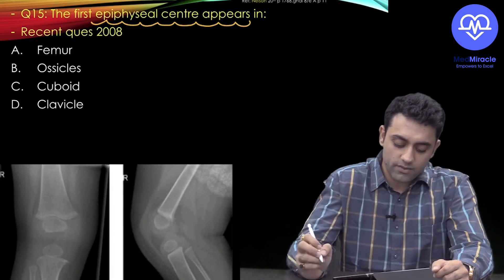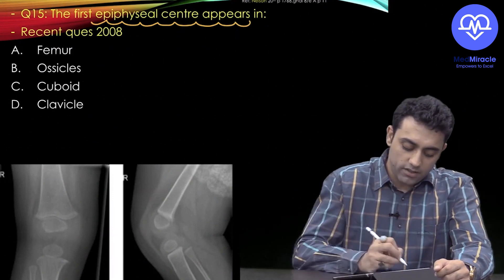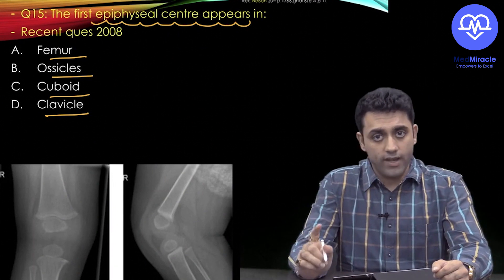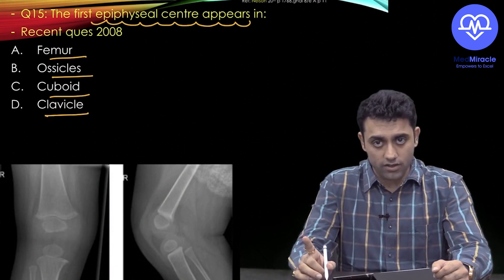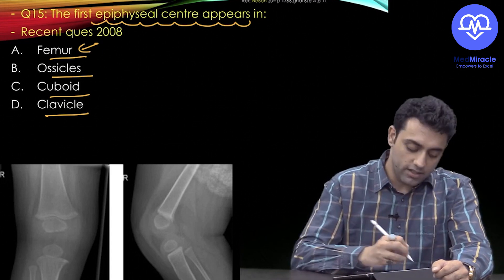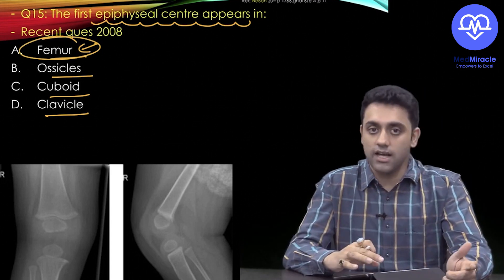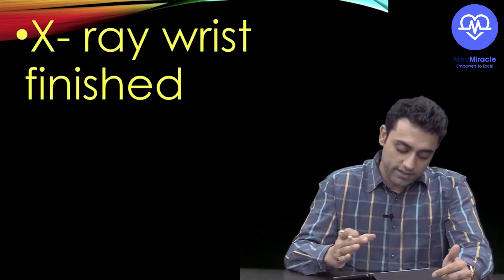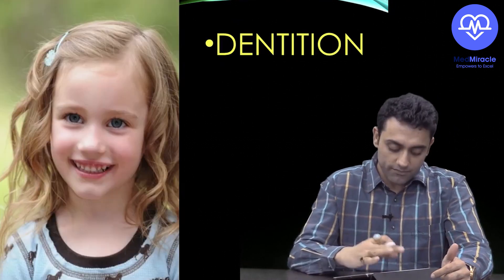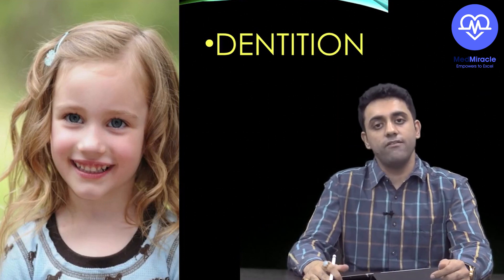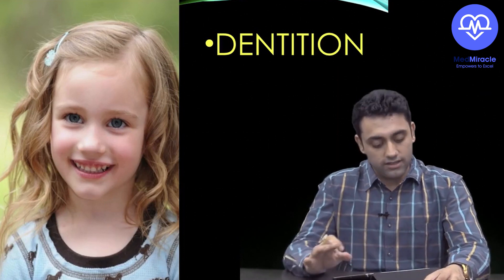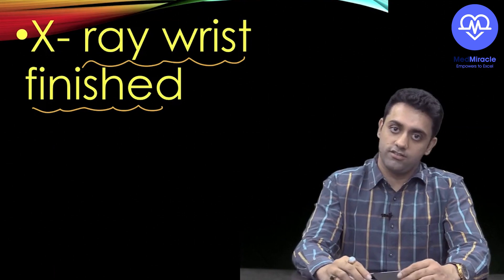Final MCQ: The first epiphyseal center appears in which bone — clavicle, cuboid, ossicles, or femur? We know the Calcaneal, Talar ossification centers and the Distal Femur and Proximal Tibial centers appear first, so the answer from the options is Femur. That finishes X-ray wrist. Next, we'll cover dentition. Thank you.